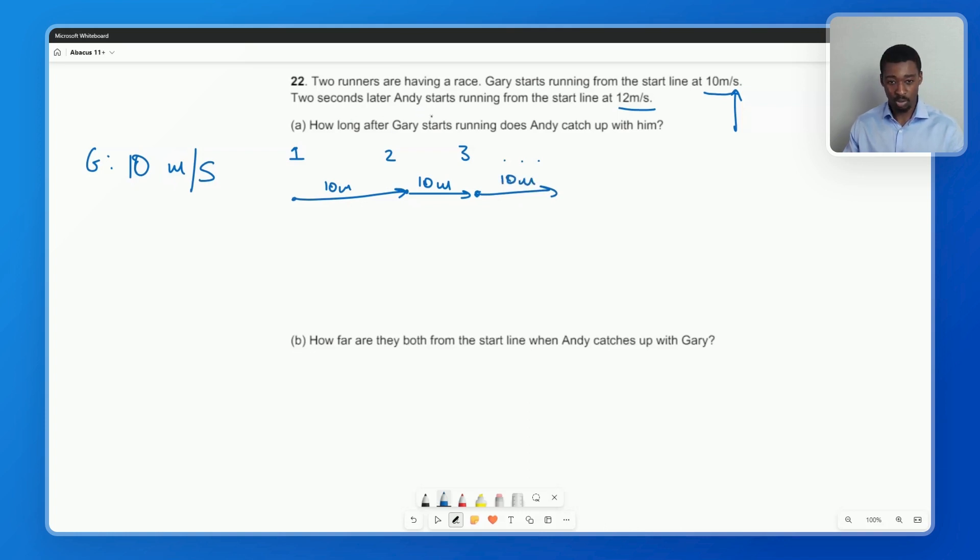And then two seconds later, we're told Andy starts running from the line at 12 meters per second. So for Andy, every single second, we'll put it in red, every single second, Andy's running 12 meters, another 12 meters. So how do we use this information to work this question out?